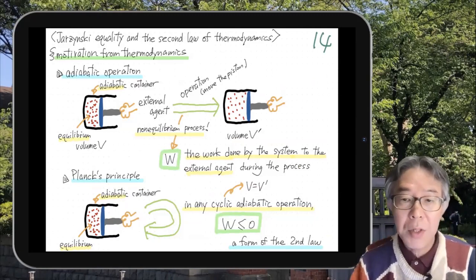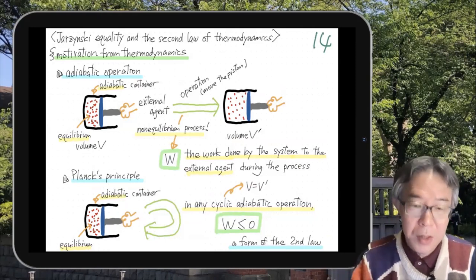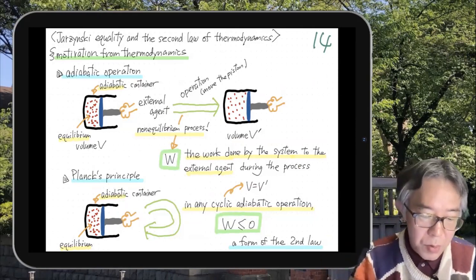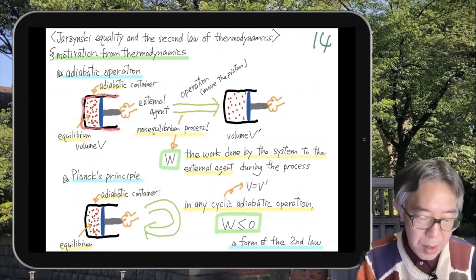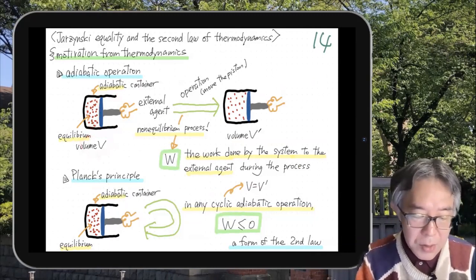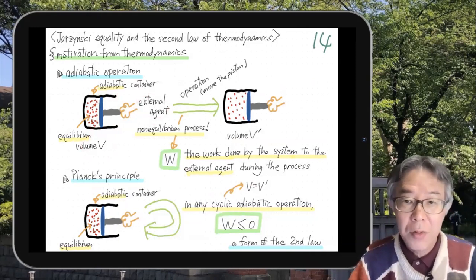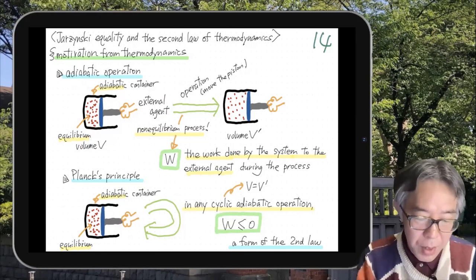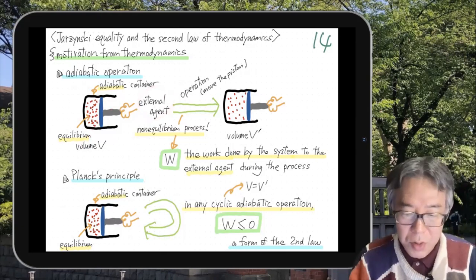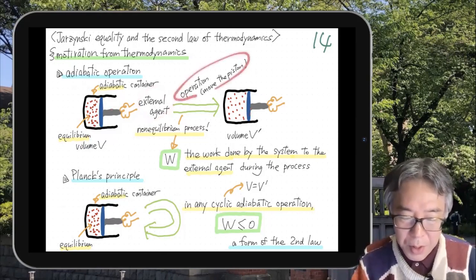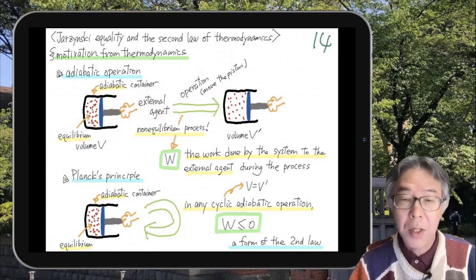By adiabatic I do not mean that we do a slow operation. Adiabatic means heat cannot go through this wall, for example. Suppose that we have an adiabatic container and inside we have a gas in thermal equilibrium with volume V. Outside is an external agent who performs mechanical operations to the system — for example, the agent can pull the piston to change the volume. So this is an adiabatic operation in thermodynamics.